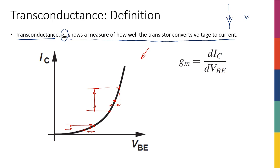There is a current source dependent on the variations in the base-emitter voltage, and that current is K times delta VBE. The bigger this K, the better amplifier we have. We'll be defining this voltage-dependent current source for small signals in a few slides. Based on this curve — because it's the slope — GM is going to be the derivative of IC with respect to VBE.